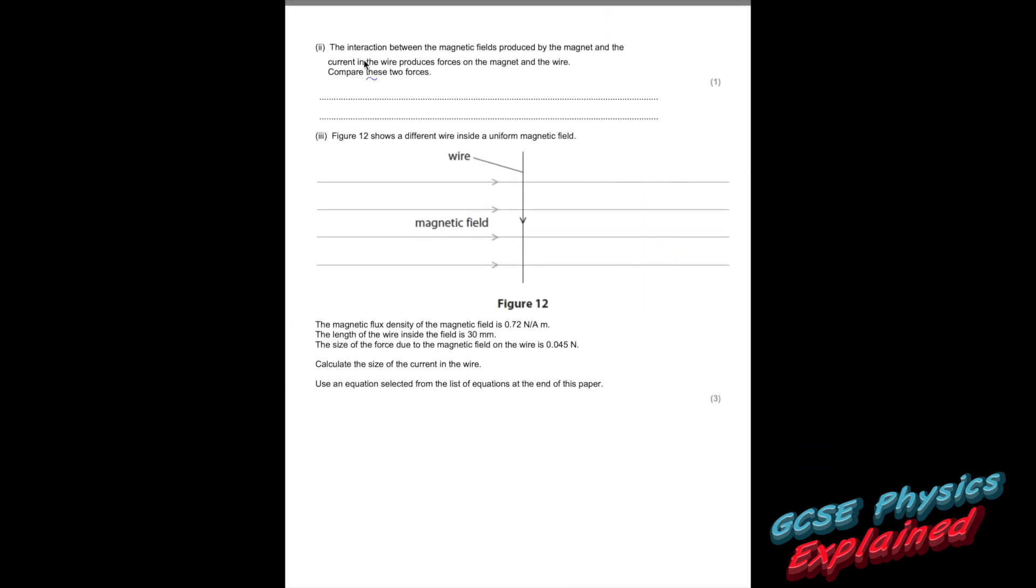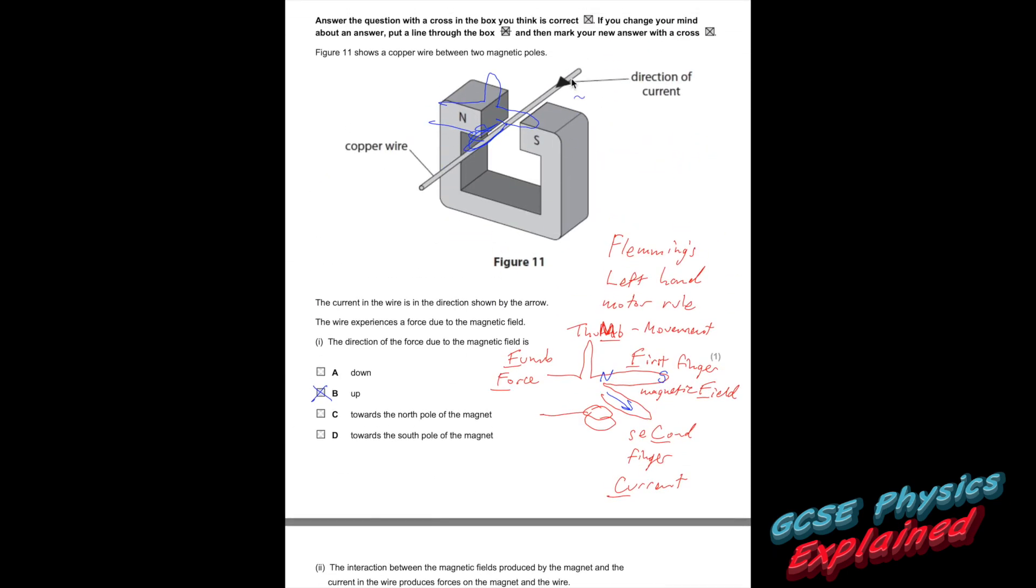Part two, the interaction between the magnetic fields produced by the magnet and the current in the wire produces forces on the magnet and the wire. Compare these two forces. What they're basically saying is because there's a current going through that wire, there'll be a magnetic field around the wire. That magnetic field around the wire is going to interact with the permanent magnetic field around this permanent magnet.